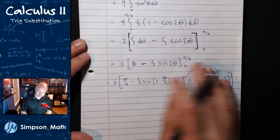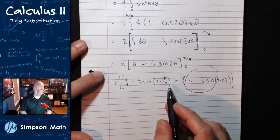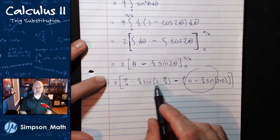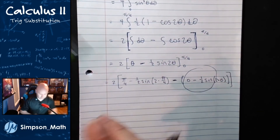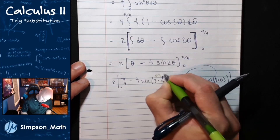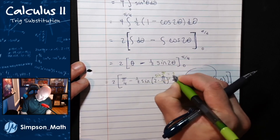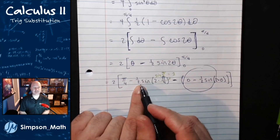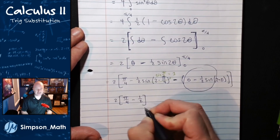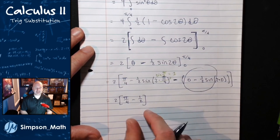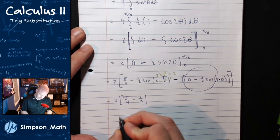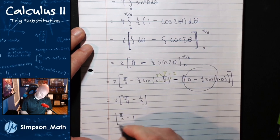So simplifying: pi fourths minus one half times one gives pi halves minus 1, which is a nice clean answer.